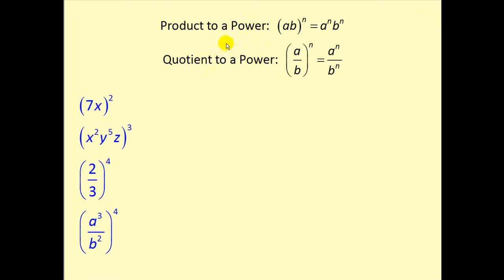Next we have the product-to-power rule and also the quotient-to-power rule. If we have a·b raised to the power of n, that equals a to the n times b to the n. This is really an expansion of the previous rule, where we have a to the first and b to the first — so if we multiply those exponents, the result is the same. The same applies to the quotient-to-power rule: a to the first divided by b to the first, both raised to a power, means we multiply exponents.